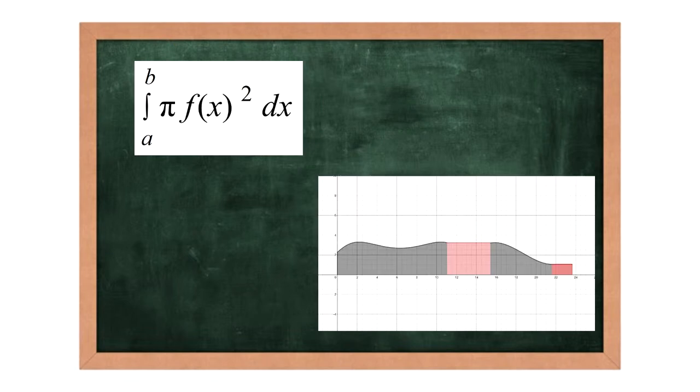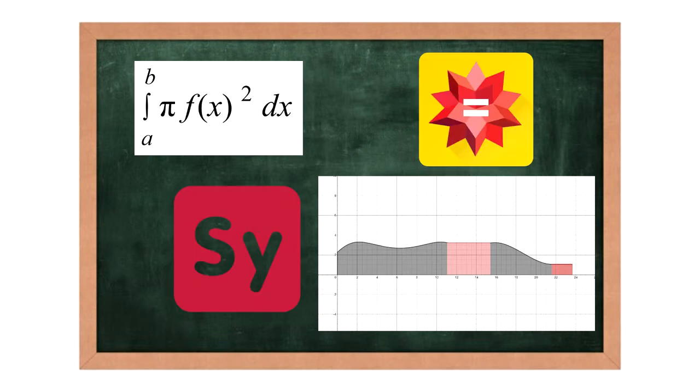Then, we used the disk formula, which is the integral of pi times the square of our function, using the function as our infinitesimal radius. Therefore, calculating the volumes for each of the equations that we used, we calculated such volumes with the aid of two pieces of software, Symbolab and Wolfram Alpha.